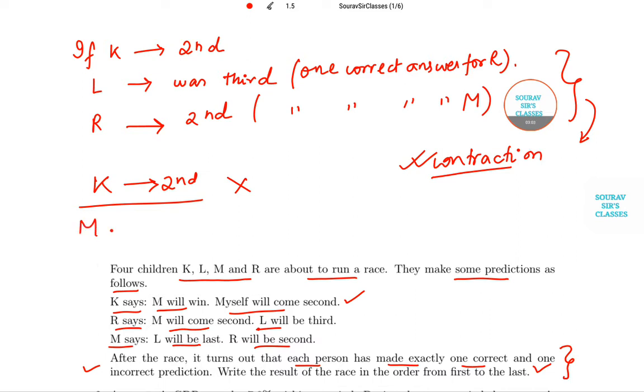So M must have won. So the order becomes M, K, R, and L. And given this order, you can analyze it yourself that the prediction of all the participants—one will be correct and the other will be wrong.